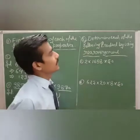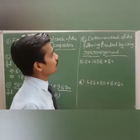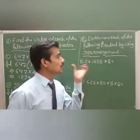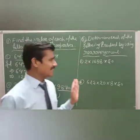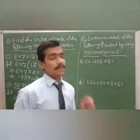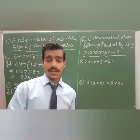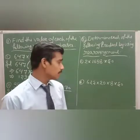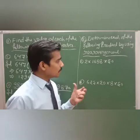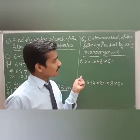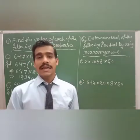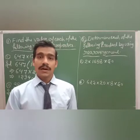Now for question 2: Determine each of the following products using rearrangement. The trick with rearrangement is that we choose numbers which, when multiplied together, give 10, 100, or 1000. So first we choose the numbers that multiply to a round number.